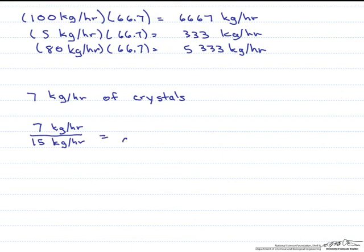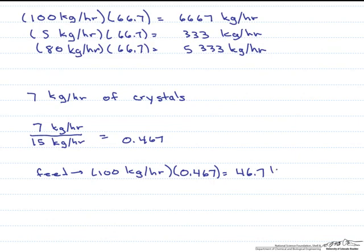So now our feed is going to be 100 kg per hour times our scaling factor, which is 0.467, or 46.7 kg per hour. In other words, to produce 7 kg per hour of crystals, we need to feed 46.7 kg per hour of our 35 weight percent aqueous solution.